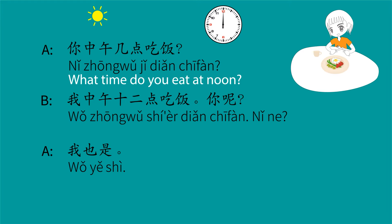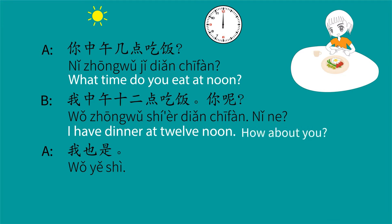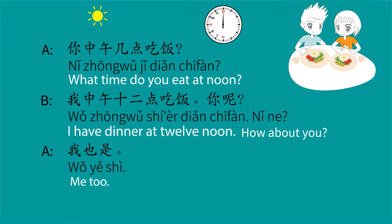我中午十二点吃饭。 I have lunch at twelve noon. 你呢? How about you? 我也是。 也 means also. 我也是 means me too.